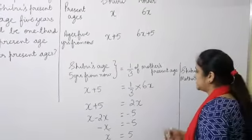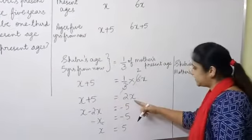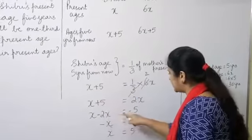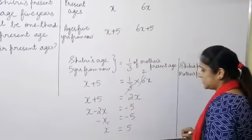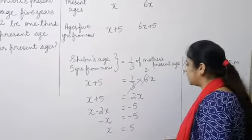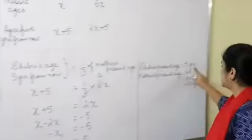Work this. So, we have X plus 5 is equal to 2X. Transpose, so we have X minus 2X is equal to minus 5. So, minus X is equal to minus 5, or X is equal to 5. Which means Shibu's present age is 5